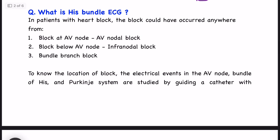What is His bundle ECG? Heart block can occur at the AV node, then it is known as AV nodal block. Block can also occur below the AV node — that is infranodal block — or at the bundle branch, which is known as bundle branch block. So a very small area: AV node, just below the AV node, or bundle branch — that is the site of AV block.